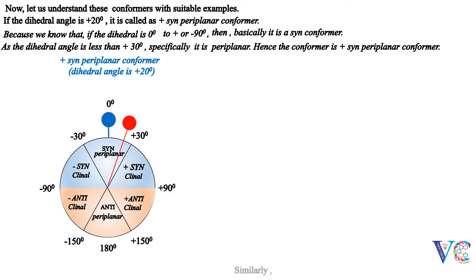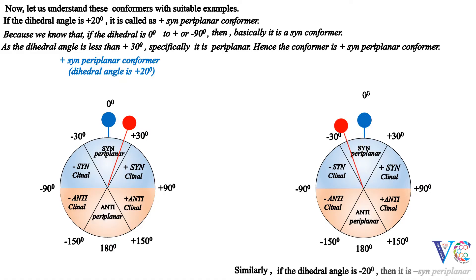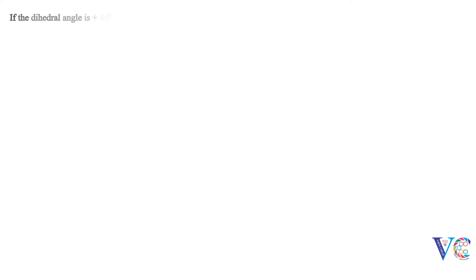Similarly, if the dihedral angle is minus 20 degrees, then it is minus syn-periplanar. If the dihedral angle is plus 45 degrees, then it is plus synclinal conformer.